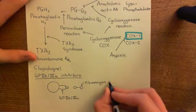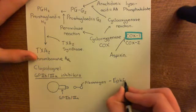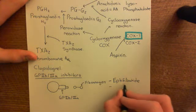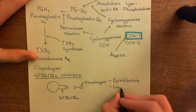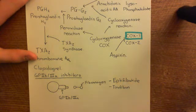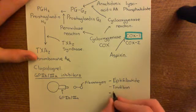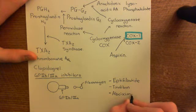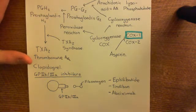There are three GP2B/3A inhibitors. The first is eptifibatide, which is a small polypeptide. The second is tirofiban, which is a non-peptide molecule that binds to GP2B/3A. The final drug is actually a monoclonal antibody against glycoprotein 2B/3A, known as abciximab. So all three — eptifibatide, tirofiban, and abciximab — will bind to glycoprotein 2B/3A and stop it from being able to bind to the lobe of fibrinogen.